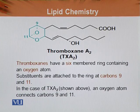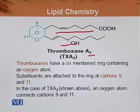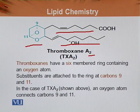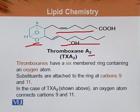This is the structure of thromboxane or thromboxane A2. We can see here that this structure is similar to the prostaglandins, but prostaglandins have a five-membered ring whereas thromboxane has a six-membered ring. There were substituents at carbon nine and ten, and here at nine and ten both have oxygen. The six-membered ring has one extra oxygen. Thromboxane has a six-membered ring containing an oxygen atom, with substituents also attached to the ring at carbon atom number nine and eleven.